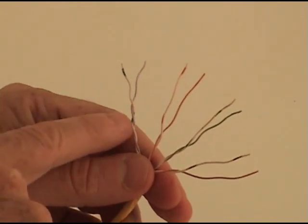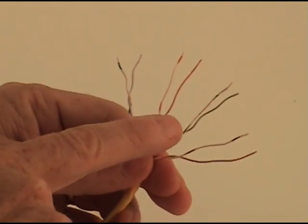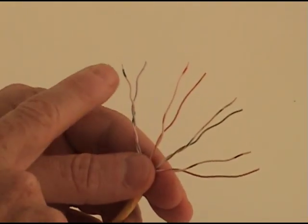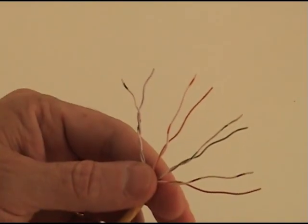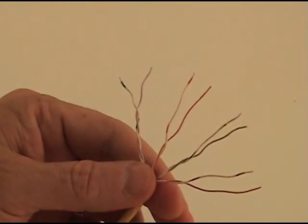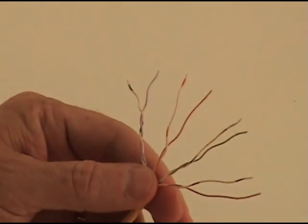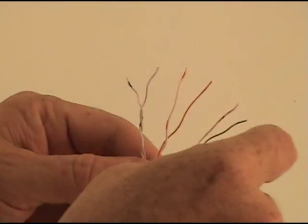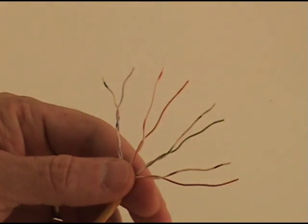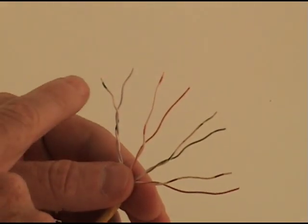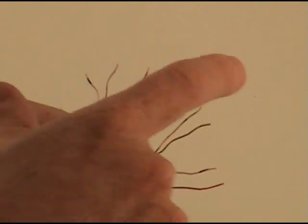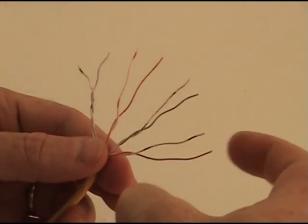So again, first pair is blue, second orange, green, brown. And then the predominantly white wire is the first wire of the blue pair. First wire of the orange, first wire of the green and brown. And so it would be wire one, two, three, four, five, six, seven, eight.